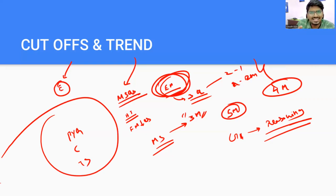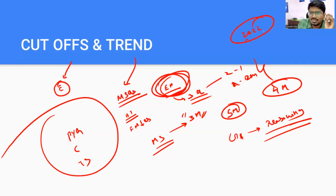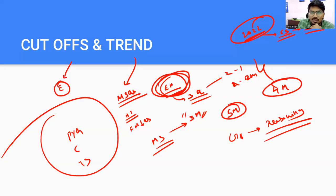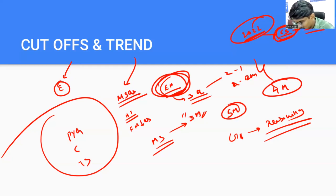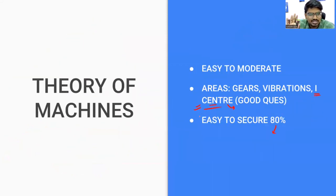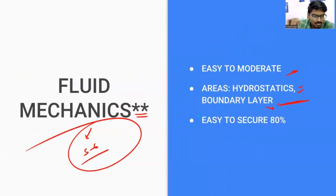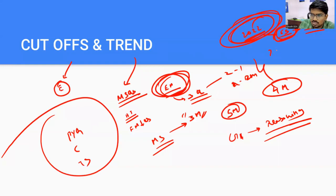This is my personal opinion and it may change once the official paper is out. In 2021 or 2022, the paper was moderate to difficult, so even 65 to 66 marks could get a rank around 1000 in ME. This time, most students might cross 70 or 65, so there may be a change in cutoffs and rankings. We need to wait for the official response sheet. My analysis: compared to the 2022 paper, the 2023 paper is surely easier — easy to moderate, not moderate to difficult.